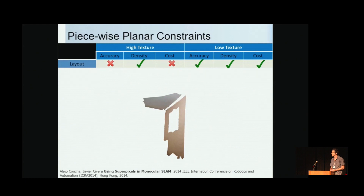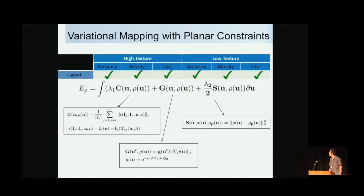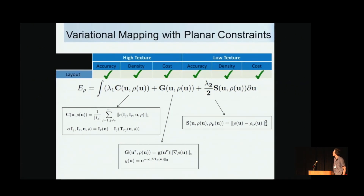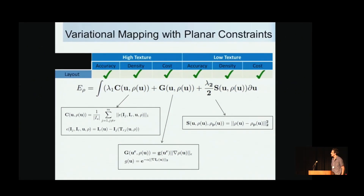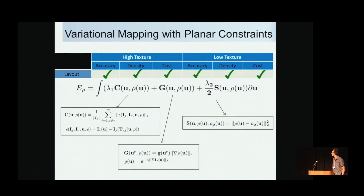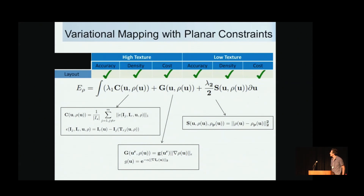The 3D reconstruction of large textured superpixels provides our planar constraint. Our variational formulation has three terms: a photometric consistency term between different views, a regularizer that smooths the surface, and our contribution — a planar constraint term coming from either the Manhattan layout or the superpixels.